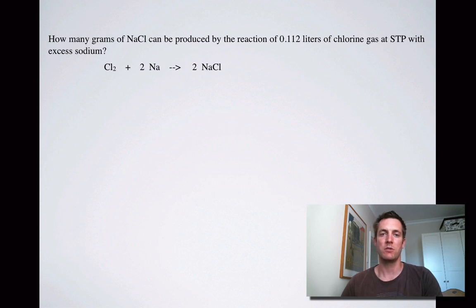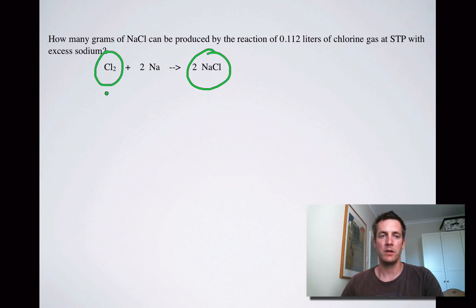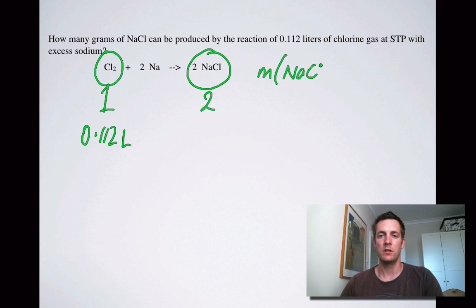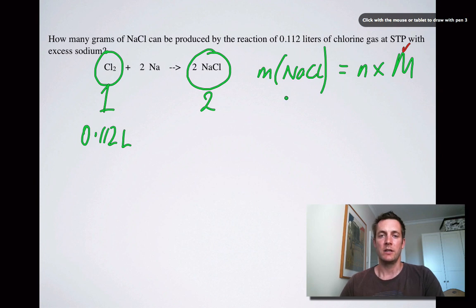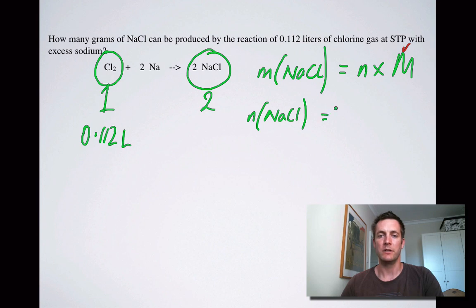Next question: how many grams of sodium chloride can be produced by the reaction of 0.112 litres of chlorine gas at STP with excess sodium? We're told about the chlorine and asked about the sodium chloride. The mole ratio is 1 mole of Cl₂ to 2 moles of NaCl. The mass of sodium chloride equals the number of moles times its molar mass, which we can look up in the periodic table. The number of moles of NaCl is 2 over 1 times the number of moles of chlorine.